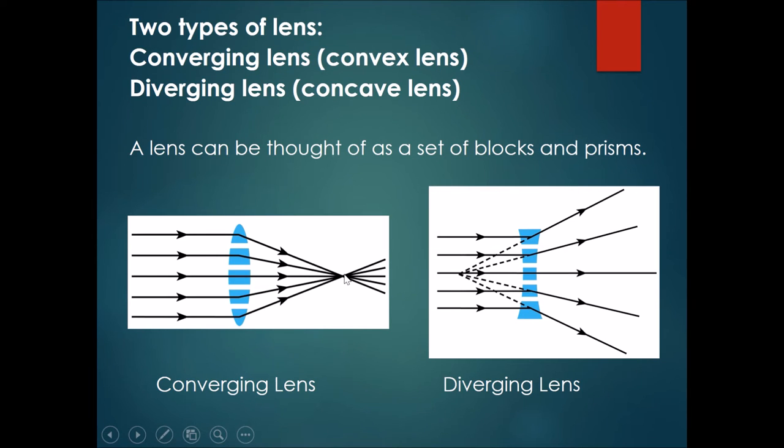As you go nearer to the edge of the lens, it becomes more and more slanted towards each other, and therefore this makes the light ray bend even more. Lenses have this particular property in that they direct all the rays towards a single point, and this is called converging lenses.